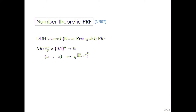The key space is Z_p to the N, the input is a bit string of length N, and the range is a cyclic prime order group of order P. The output of the pseudorandom function with key A and input X is the exponentiation of a random generator to the product of the A_i such that X_i equals 1. To ease notation, when I write something in brackets, this means a random generator G raised to the power of what is in the bracket.